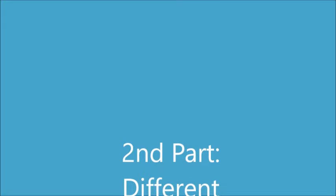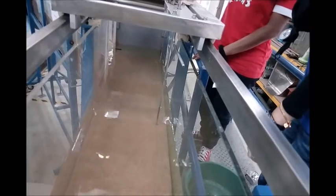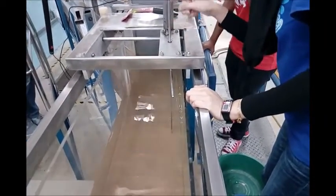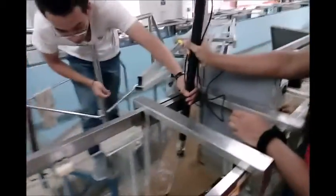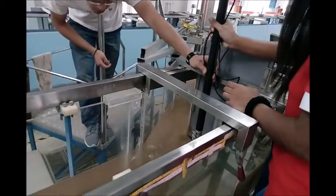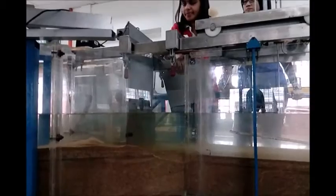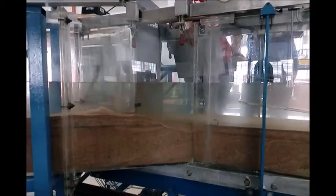Moving on to the second part, we wanted to investigate whether Manning's roughness coefficient varies with channel alignment. At a certain flow depth, we used the branch type of channel, observed the water flow, and measured the velocity using the current meter. We then repeated the steps using a straight channel, and the velocity was recorded again.